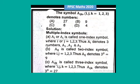A_ijk is called three-indexed symbol, where i, j, k equal to 1 to 3. Thus A_ijk denotes three power three is equal to 27.